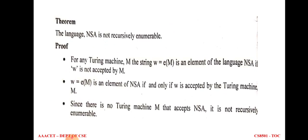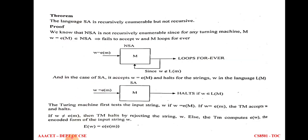From self accepting and non-self accepting language, there is one theorem: NSA is not recursively enumerable. We know that for a recursively enumerable language, the Turing machine accepts the input string which belongs to the language; it does not accept the string which does not belong to the language, and may go to an infinite loop. To prove this theorem, for any Turing machine M, we assume string W = E(M). W is an element of NSA if and only if that input string is accepted by the Turing machine. Since there is no Turing machine for accepting NSA, it is not recursively enumerable.